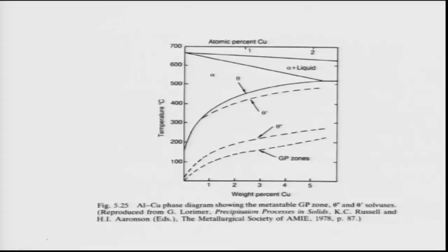Aluminum-copper, especially the aluminum-rich copper alloys, undergoes precipitation-hardenable phase transformation. In this slide, a part of the Al-Cu phase diagram is shown involving the alpha phase and the liquid-plus-alpha phase, with dotted lines indicating the formation of transient phases during aging treatment.